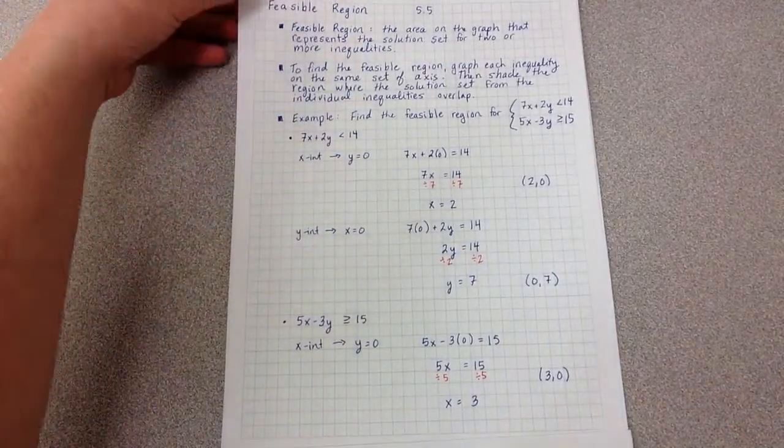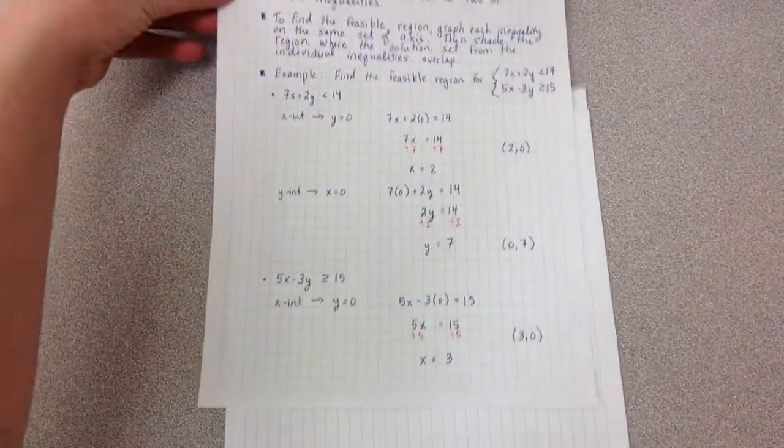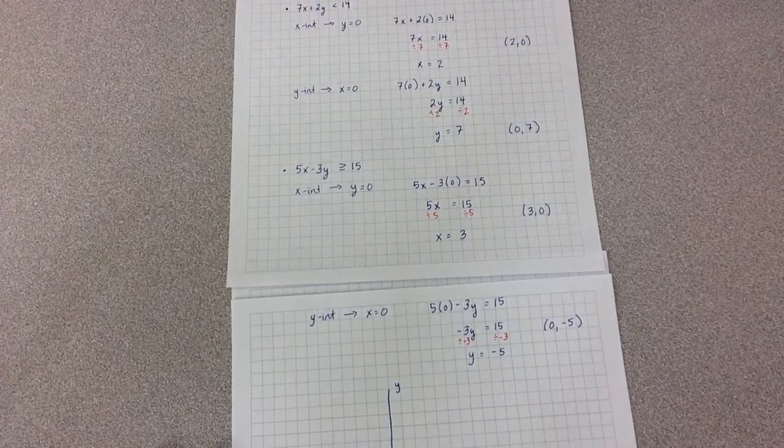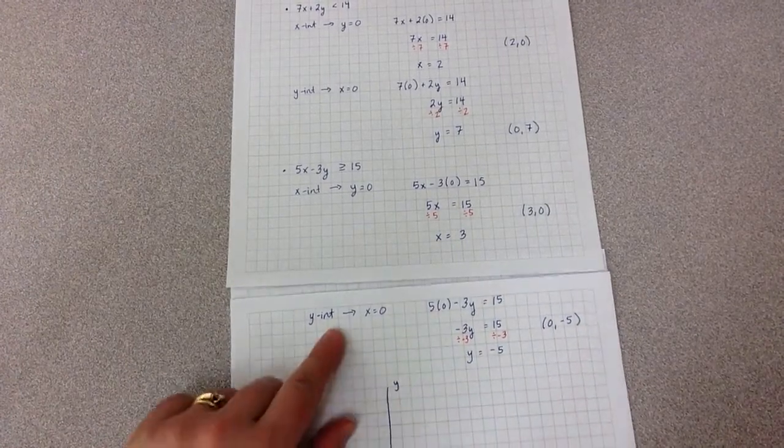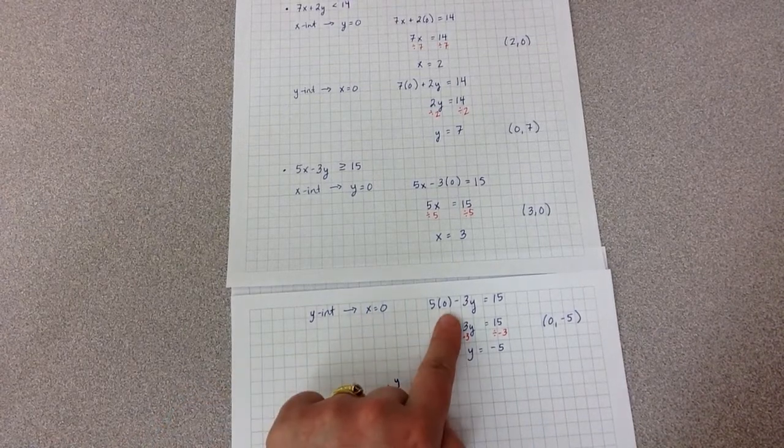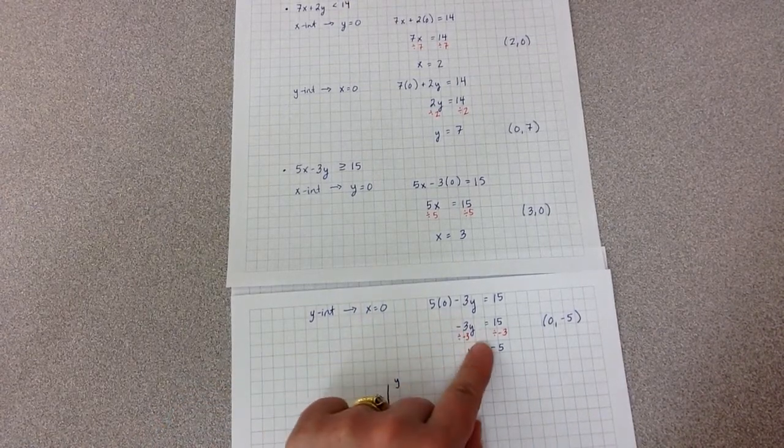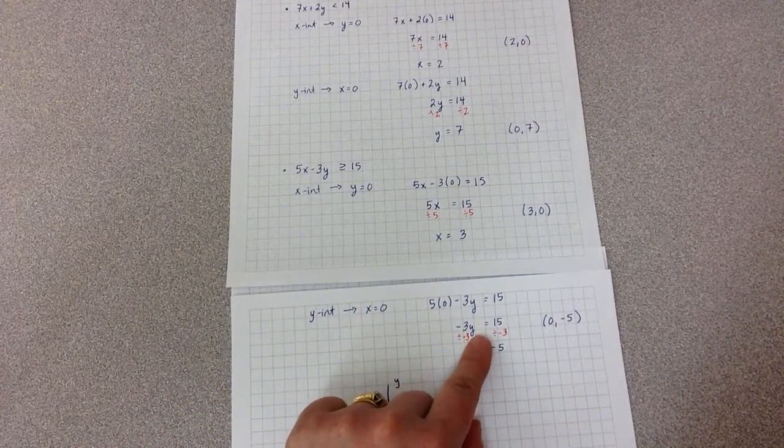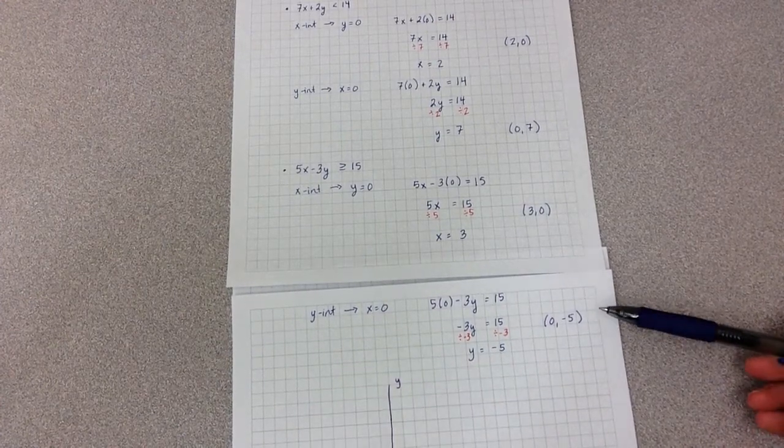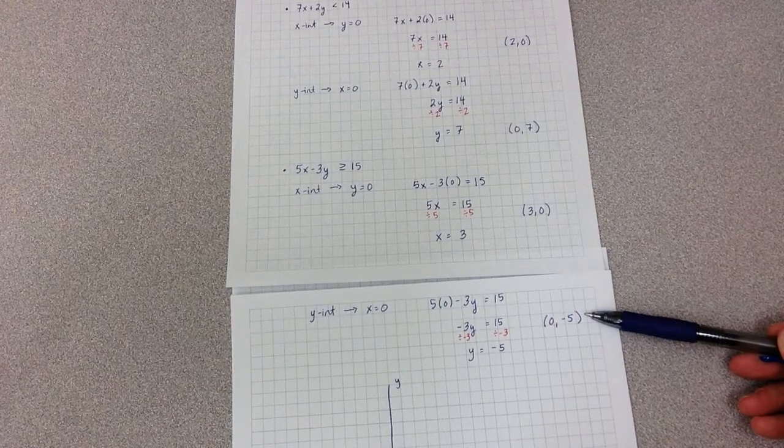Now I'm going to do the last step for finding the x and y-intercepts by doing this exact same process. The y-intercept is when x equals 0. I plug in x equals 0, simplify, divide by negative 3, y equals negative 5. And I've got the point 0, negative 5.